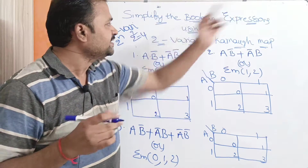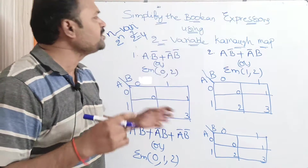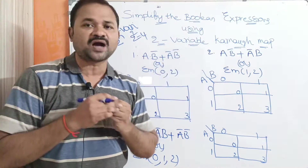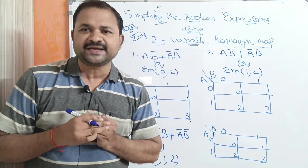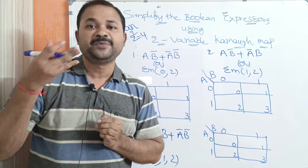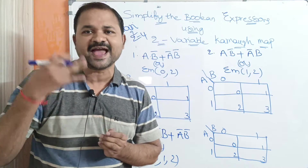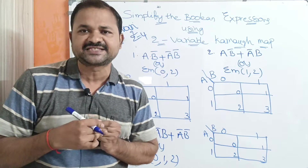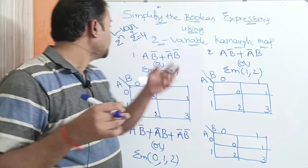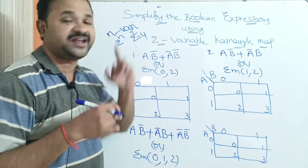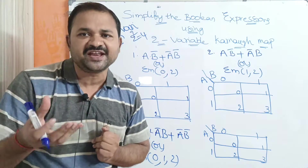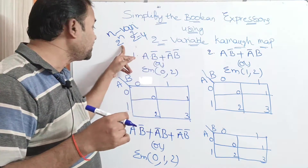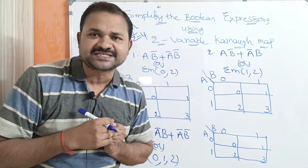Let us simplify the following Boolean expressions using a two-variable Karnaugh map. A Karnaugh map is a pictorial or diagrammatic representation made up of cells or squares. For an n-variable function, we will have 2 to the power n cells or squares.